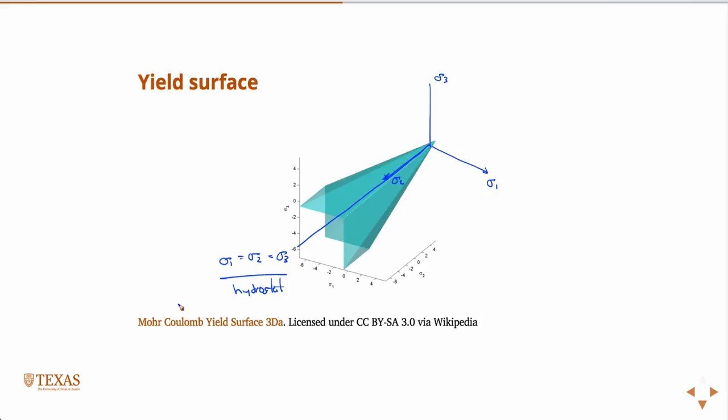We'll see this in some data in a second, but this is why it has this conic section. As I increase the confinement, the rock behaves stronger, and you'll see this in the lab too when you go and do tests. I mentioned last time that the unconfined compressive strength is not really a good measure of the strength of the rock, because in the real world, all rocks have some lateral confinement.